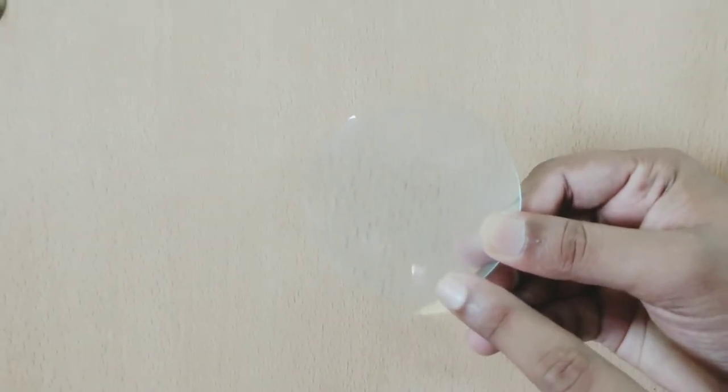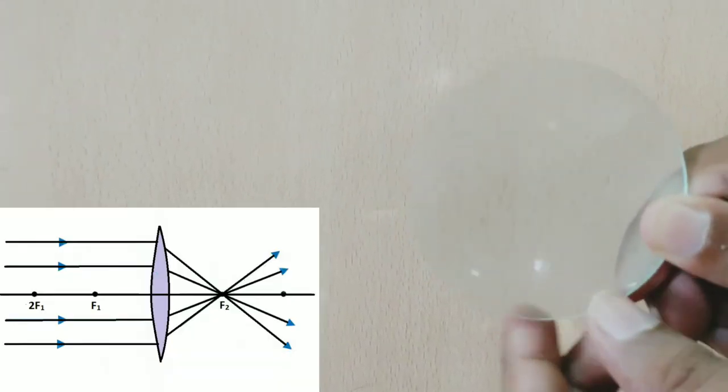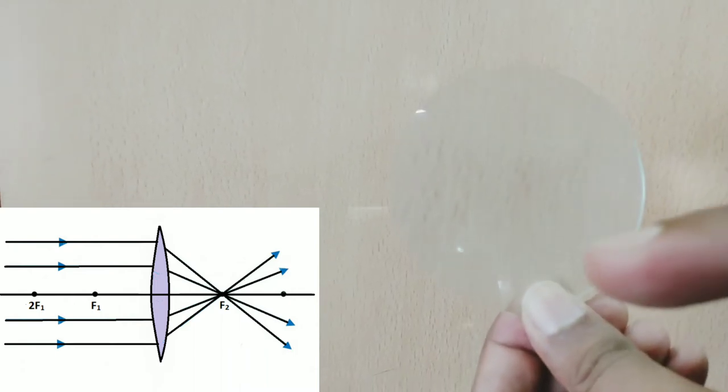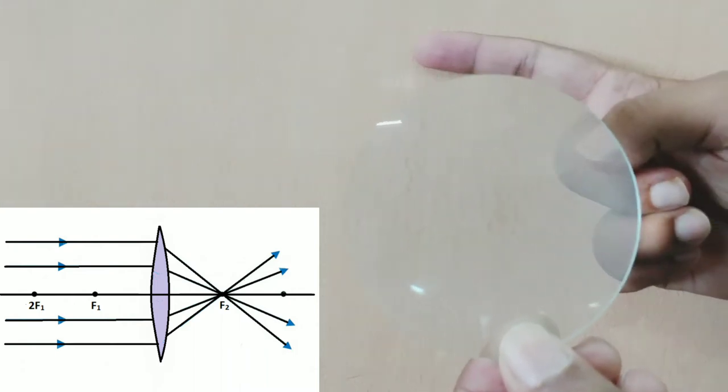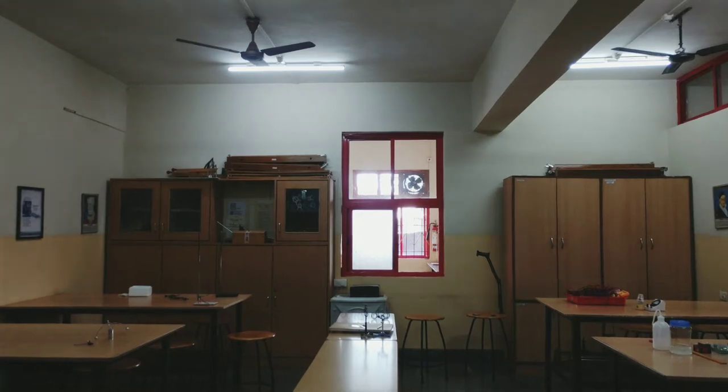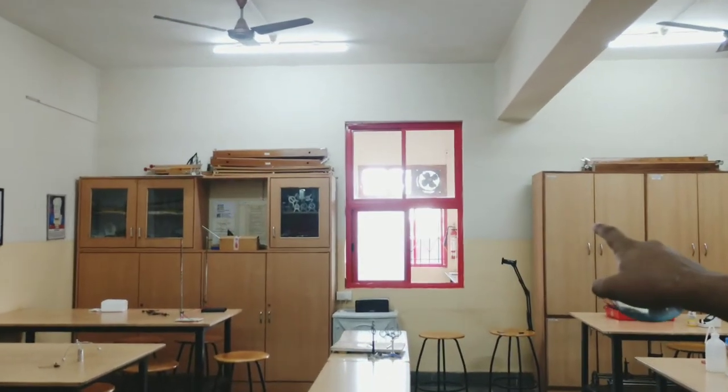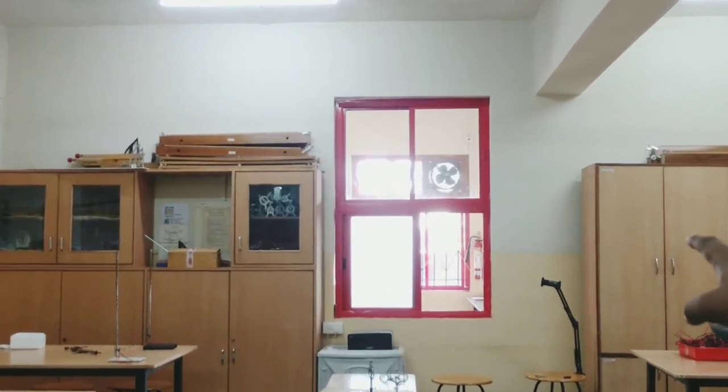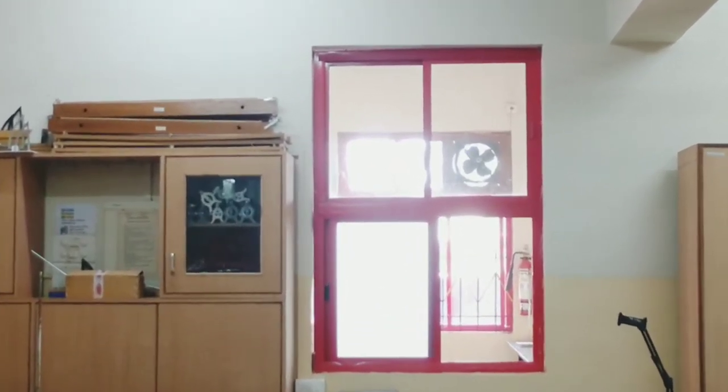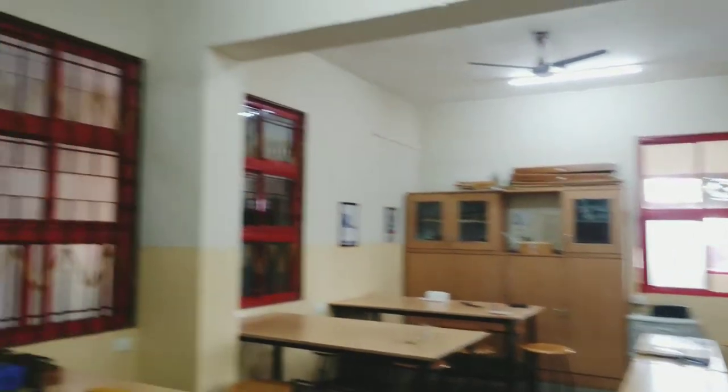Now how to find the focal length of a convex lens? For that you need a source and a screen. For convex lens, the condition is that you need a source on one side of the lens and the screen on the other side. To find the focal length of a lens, we need a source. Our source is now this window from which we're getting sunlight, and then we need a screen.